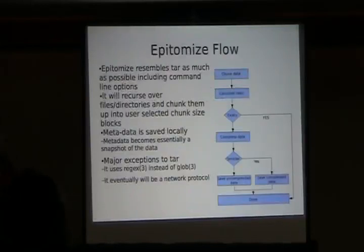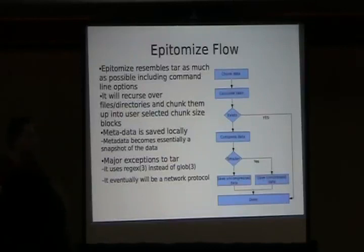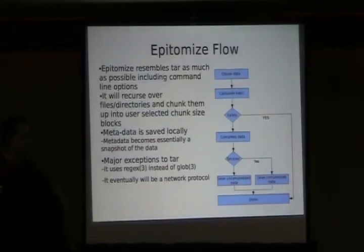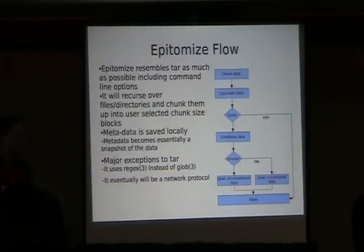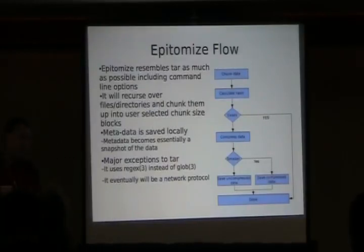Here's the flow of Epitomize. Currently, when you open a file, you recurse through the directories, open a file, read a chunk — whatever size that is. If you set it to 16K, it will read 16K of that file, calculate the hash over that, and basically ask the backend: hey, does this exist? If the answer is yes, you're done and move on to the next chunk. If it doesn't exist, you compress the data — because you do want to save disk space — and if the data doesn't become any smaller, you don't save it compressed. If it does become smaller, you save it compressed to save some additional bytes.